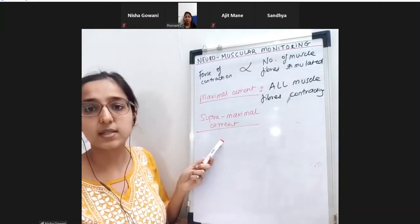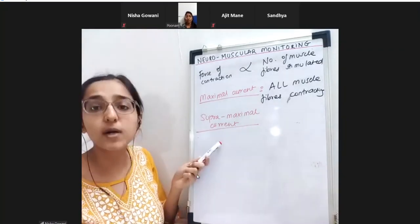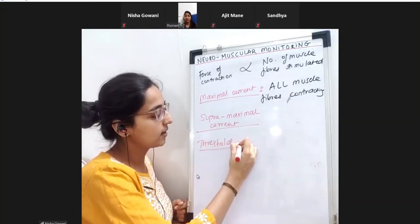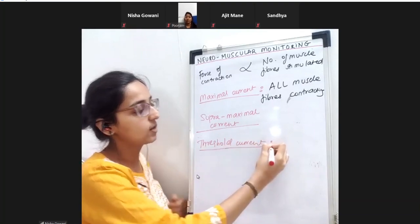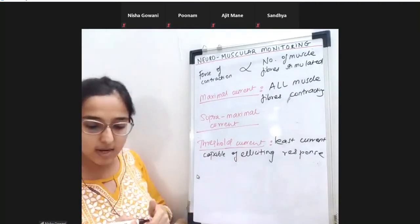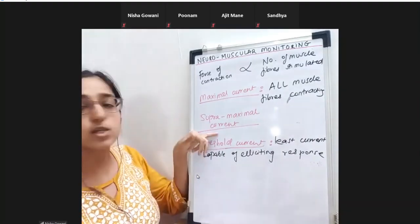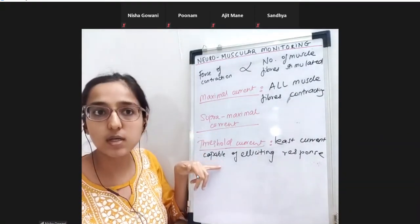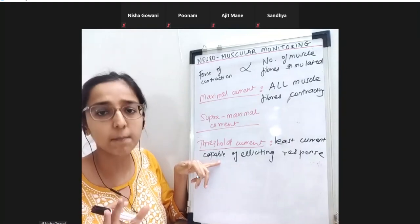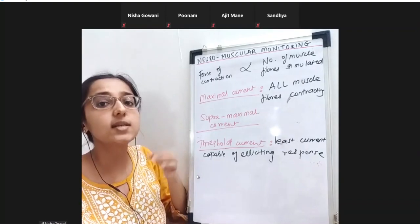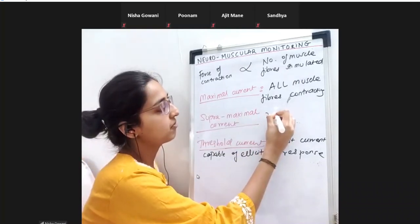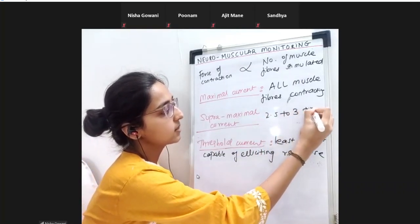How much is supra-maximal? First we understand threshold - it is the least amount of current able to give you some muscle response, the smallest current which can give a response. Supra-maximal current is 2.5 to 3 times the threshold value.